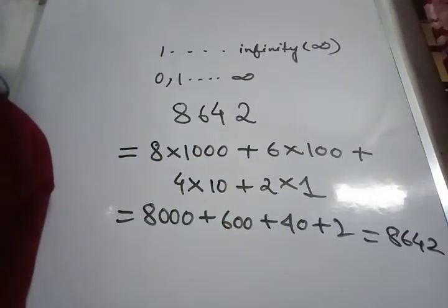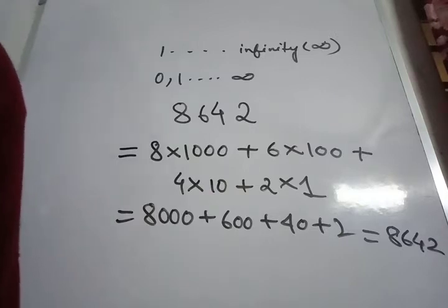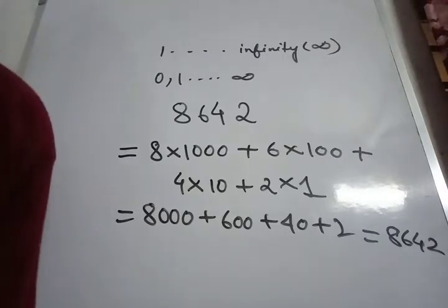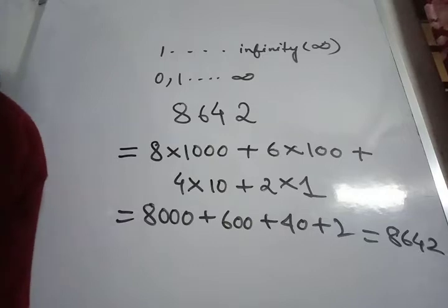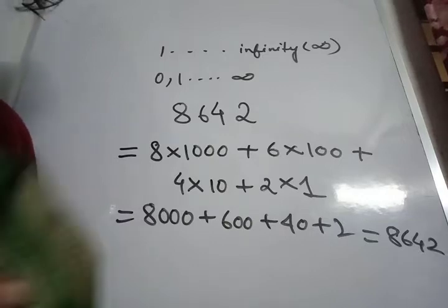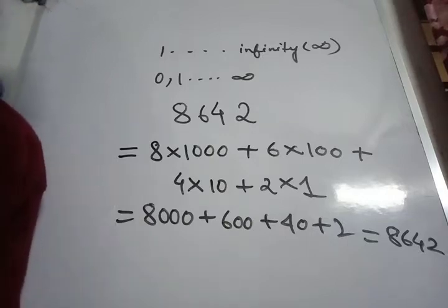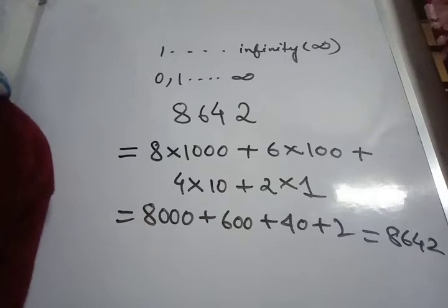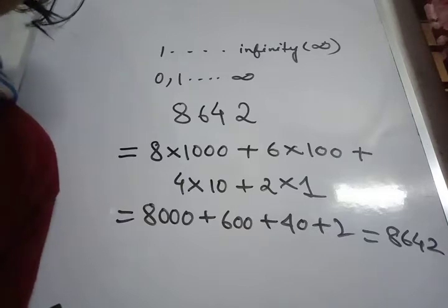Next, we come to prime numbers and composite numbers. A number which is divisible by 1 and itself and not divisible by any other number, that is called a prime number, for example 2, 3, 5, 7, etc. Next, a number which is divisible not only by 1 and itself but also by other numbers is called a composite number, for example 6, 12, 15, etc. The number 1 is neither prime nor composite.